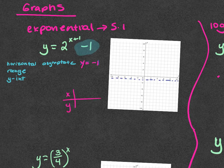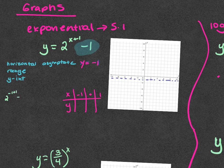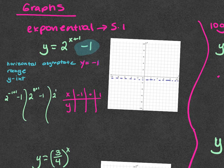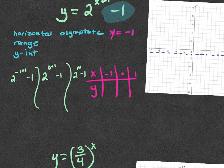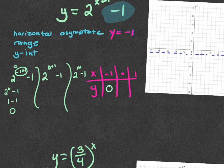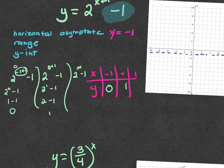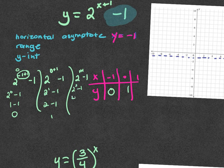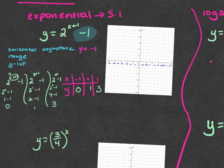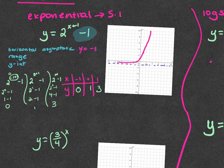With exponentials we plug in for x, so I'm going to make a t-chart. Plugging in x = negative one: negative one plus one is zero, two to the zero is one, one minus one is zero. For x = 0: two to the first is two, two minus one is one. For x = 1: two squared minus one is four minus one, which is three. So points are: (negative one, zero), (zero, one), and (one, three). It gets as close to that horizontal asymptote as it can without touching it.